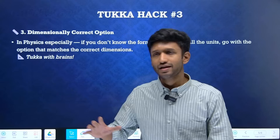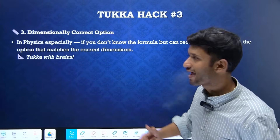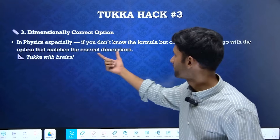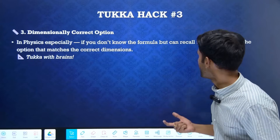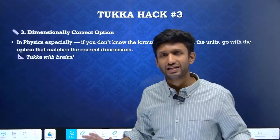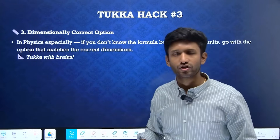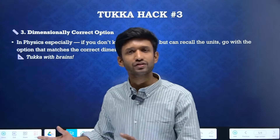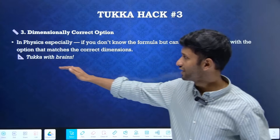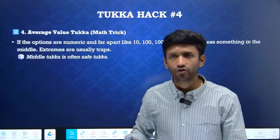The next technique is the dimensionally correct option tukka hack. This is mostly useful in physics. If you don't know the formula but can recall the units, go with the option that matches the correct dimensions. In the chapter on units and dimensions, and in various other areas of physics, you can find applications of this concept. This is how you apply tukka with brains.